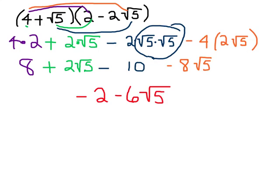Then I've got 4 times negative 2 square root of 5, which gives me, in the orange, negative 8 square root of 5, because this 2 times this 4. And then finally, I've got square root of 5 times negative 2 times the square root of 5, here in the blue. Negative 2 times square root of 5 times square root of 5 is actually 5, so I have negative 2 times 5, which is negative 10. When I combine all that together, 8 and negative 10 give me negative 2. And then negative 8 square root of 5 plus 2 square root of 5 equals negative 6 square root of 5.